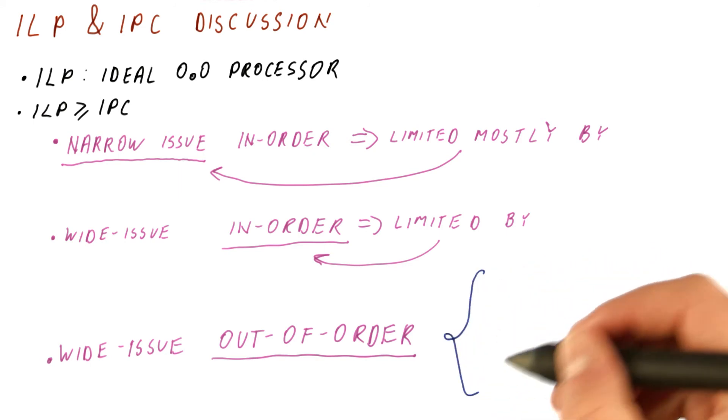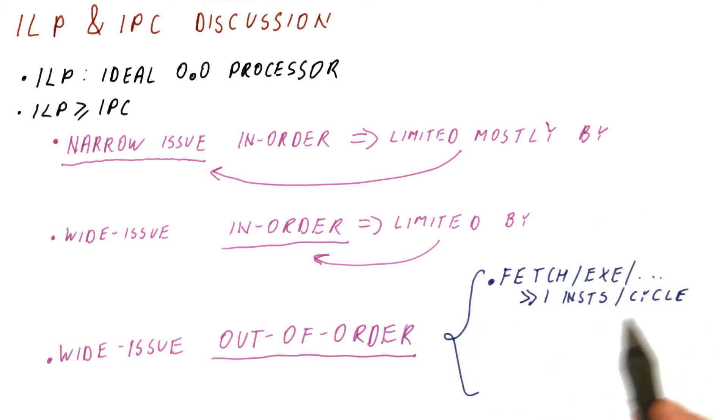So such a processor will need to fetch, execute, et cetera, more than one instruction per cycle, preferably a lot more than one. So it cannot be just like two, it should be four maybe or more. That's why we call it wide issue.